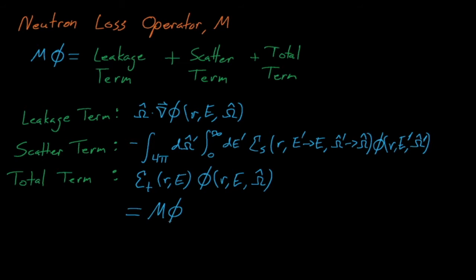Now if we were trying to just look at M by itself and take the flux out of these equations, then the M neutron loss operator would simply be Ω dot the gradient of something minus the integrals over the solid angle and energy prime functions of the double differential scattering cross-section times something, and then σₜ times something. When we have M operate on φ, it inserts φ into the place of all these somethings in these equations.